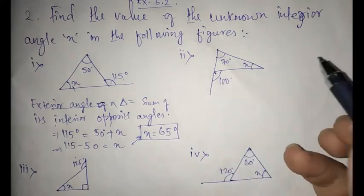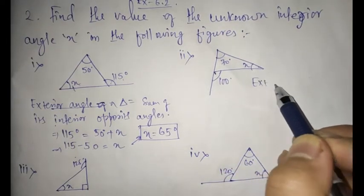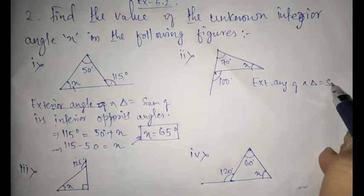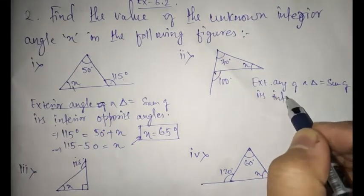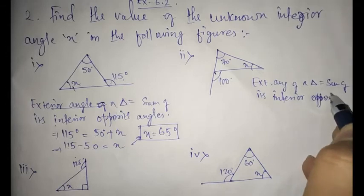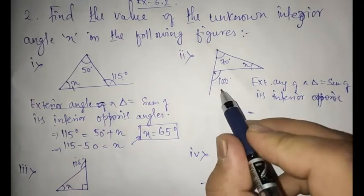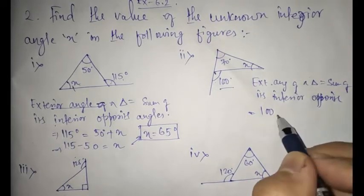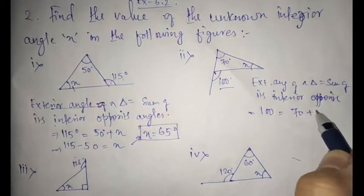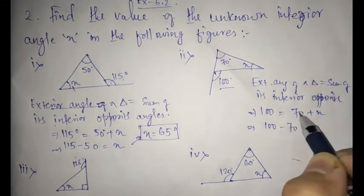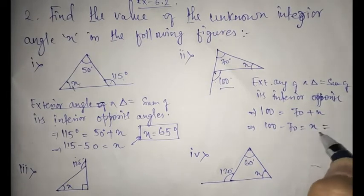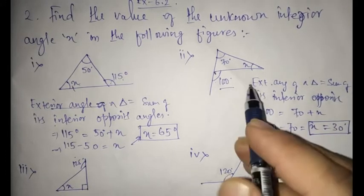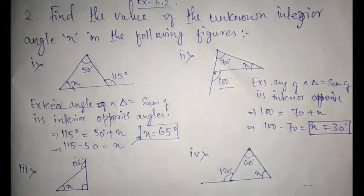For the second one also, you are going to apply the same formula: exterior angle of a triangle is equal to the sum of its interior opposite angles. So what is your exterior angle given? It is 100. Now sum of the interior means 70 plus x. So I can write 100 minus 70, because this 70 will come here and become minus 70. So when you calculate the value, x is equal to 30 degrees. So 70 plus 30 makes 100 degrees. This is quite logical.